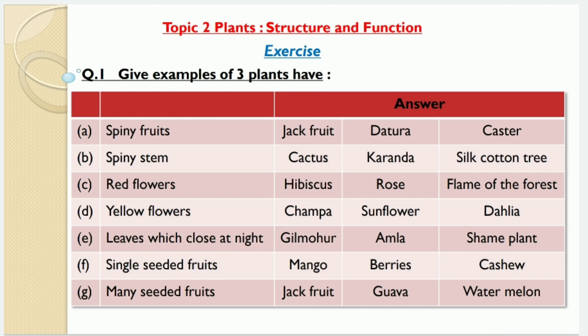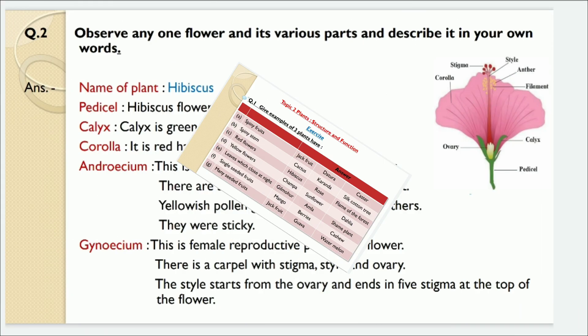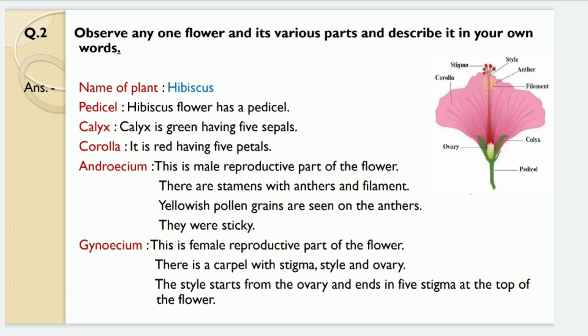And the last one — the plants having many seeded fruits are jackfruit, gourd and watermelon.